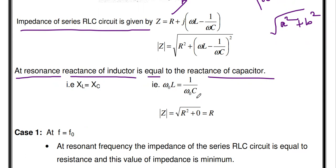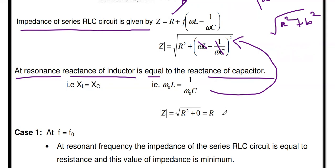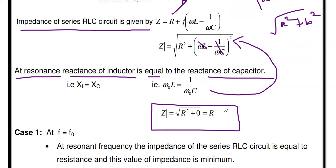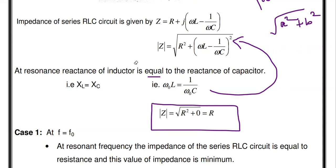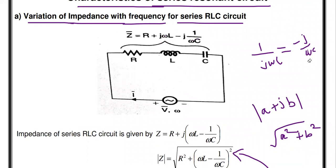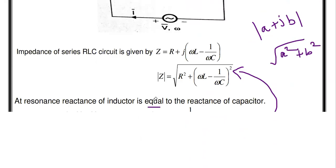At resonance, XL = XC, meaning ω₀L = 1/(ω₀C), where ω₀ is the resonant frequency. Substituting this condition into the total impedance equation, the imaginary component becomes zero. So |Z| = R — the series RLC circuit behaves like a purely resistive circuit at resonance. This resistive value R is the minimum impedance value of the circuit.